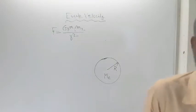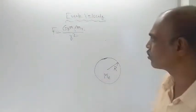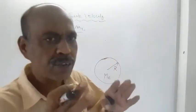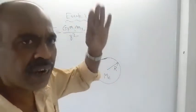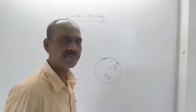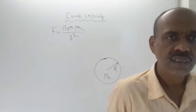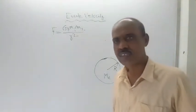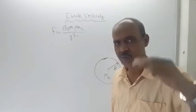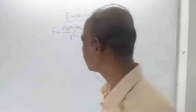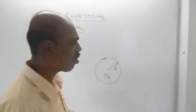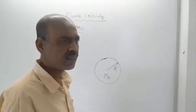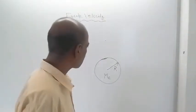So the question is: what is escape velocity? Escape velocity is defined as the minimum velocity you must provide so that the object will not return back to the surface of the Earth. Below escape velocity, the object will again fall on the surface of the Earth. Escape velocity is thus the minimum velocity for which the object will not return to the surface.